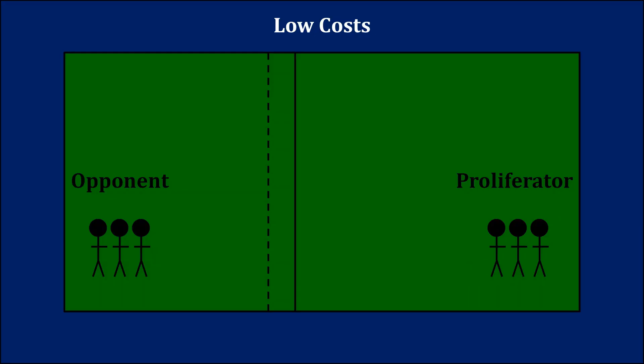To begin, let's review the general logic of nuclear negotiations. The opponent thinks about what would happen in a world where a potential proliferator had a fully realized nuclear weapon, and it calculates the number of concessions it would have to give to convince the proliferator not to use those nuclear weapons. Here, we're representing that amount with a dashed line. Pre-proliferation, the opponent offers concessions commensurate with that eventual outcome to the potential proliferator.